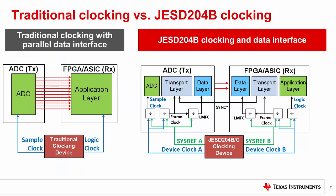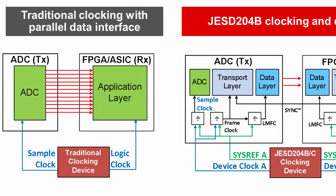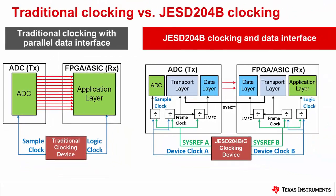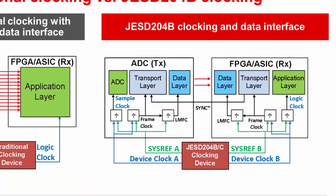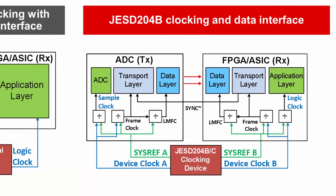How does JESD204B clocking differ from traditional clocking? In a traditional system, each converter and logic device gets a clock. The left portion of this slide shows the ADC and FPGA receiving a single clock. Synchronization of the data is left up to the user. In a JESD204B system, each converter and logic device gets a device clock and a sysref. The right portion of this slide shows the ADC and FPGA both receiving a device clock and sysref.